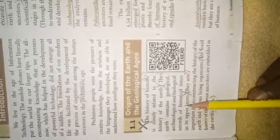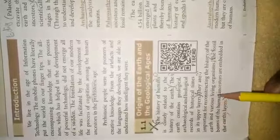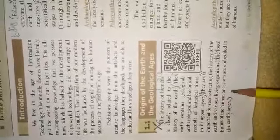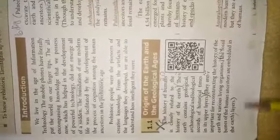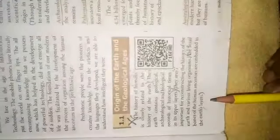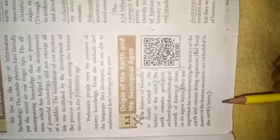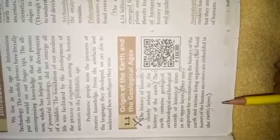We will see the origin of the earth and the geological ages. The history of humans is closely related to the history of the earth. The earth contains geological, archaeological, and biological records of historical times in its upper layers. They are important for reconstructing the history of the earth and various living organisms. The fossil bones of human ancestors are embedded in the earth's layers. Fossil means the naturally preserved remains or traces of animals or plants that lived in the geologic past — for example, footprints.